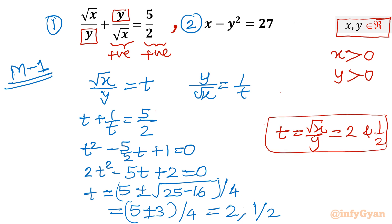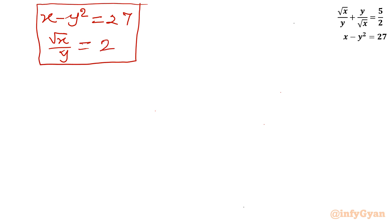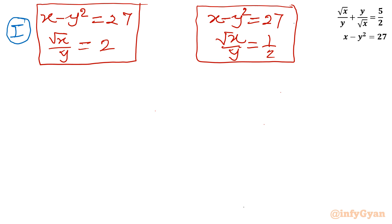Now I will frame two systems of equations using these two t values. System 1: x minus y squared equal to 27, and root x over y equal to 2. System 2: x minus y squared equal to 27, and root x over y equal to 1 over 2. Let's solve both systems one by one.